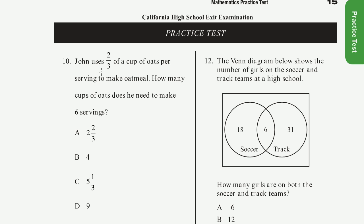Problem 10. John uses two-thirds of a cup of oats per serving to make oatmeal. How many cups of oats does he need to make six servings?